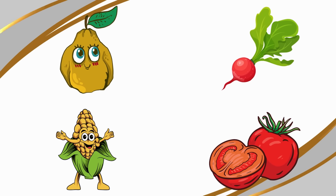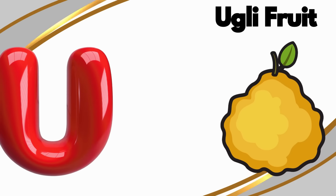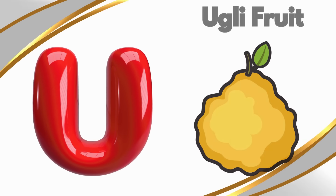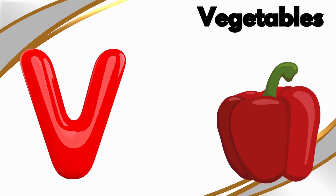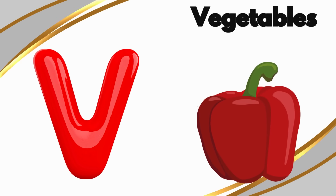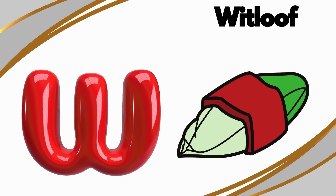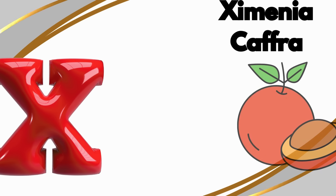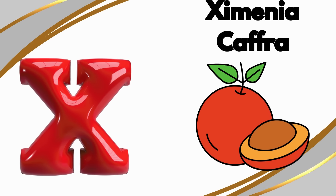U is for ugly fruit, u-u-ugly fruit. V is for vegetables, v-v-vegetables. W is for witloaf, w-w-w-witloaf. X is for zymeniacap, z-z-z-zymeniacap.